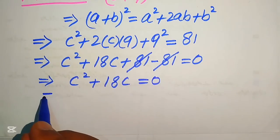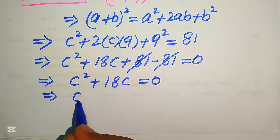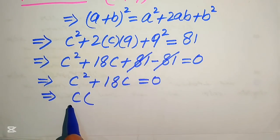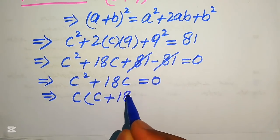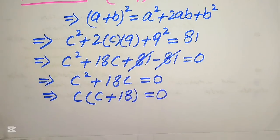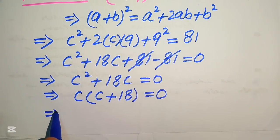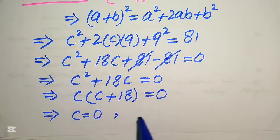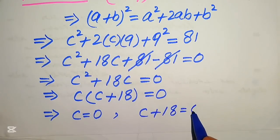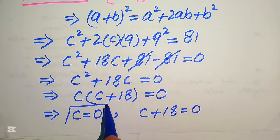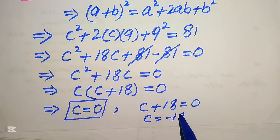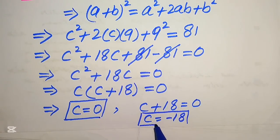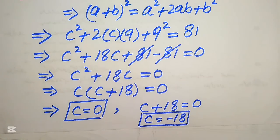We see that c is the common factor from both terms. Taking c as common, we get c(c + 18) equals 0. Dividing into two cases: c equals 0, and c + 18 equals 0, giving c equals minus 18. Both methods give the same two solutions.